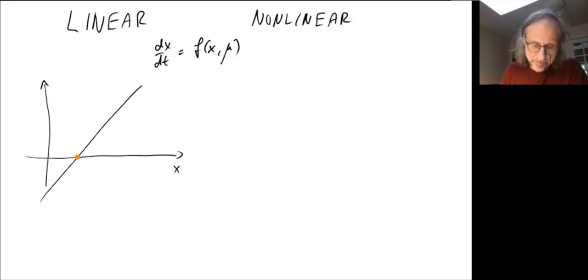the only thing that can happen when I change a parameter is the straight line could look like this, could look like this. And that means that this fixed point moves to the right. That's it. You can't really do nothing else. The only thing that can happen is that eventually it disappears at infinity, maybe. But that's it. There's always a fixed point. There's always one fixed point.